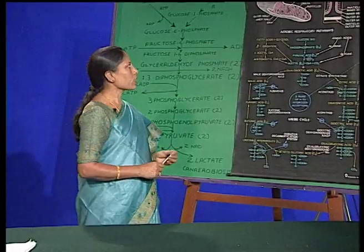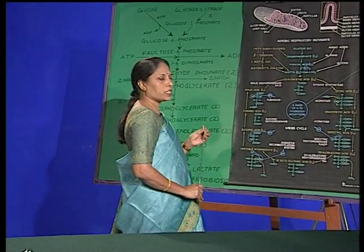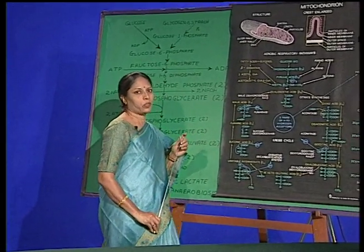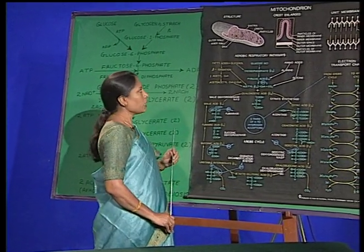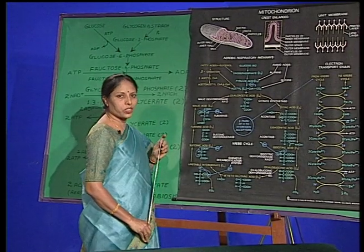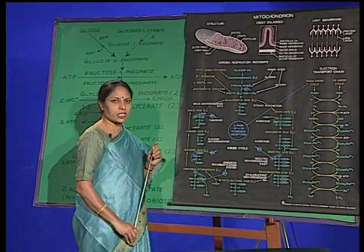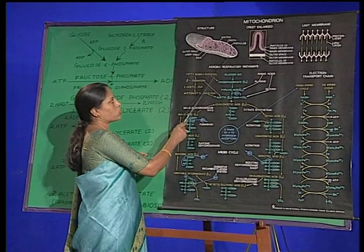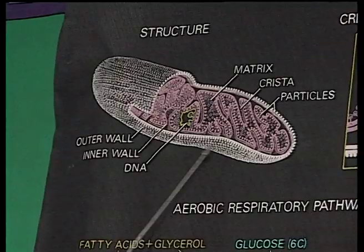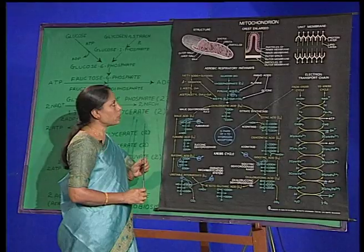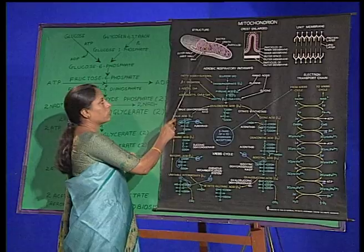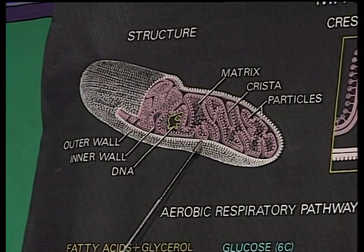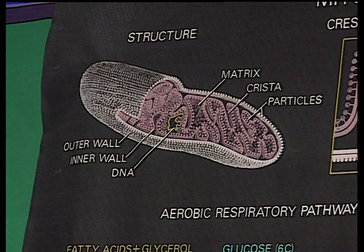If we look at the structure of mitochondria, in 1894 Altman discovered the mitochondria and predicted its association with cellular oxidation. Under a light microscope, it appears as a solid particle, but if observed under an electron microscope, mitochondria are made up of two layers — they are double-layered structures.